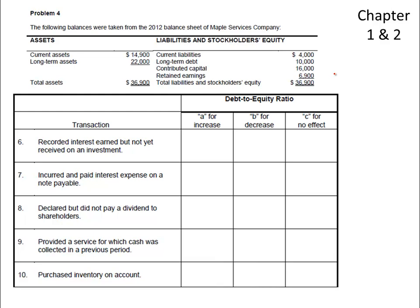In this review for the first exam, we're asked the impact these transactions have on the debt-to-equity ratio. Debt-to-equity is total liabilities over total shareholders' equity. In this case, total liabilities are $14,000 and total shareholders' equity is $22,900, giving a debt-to-equity of 0.61, meaning the shareholders have a greater say than the creditors. Let's look at these transactions.